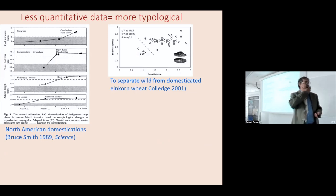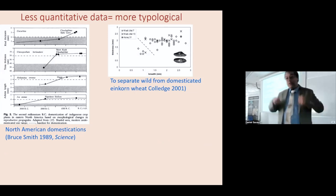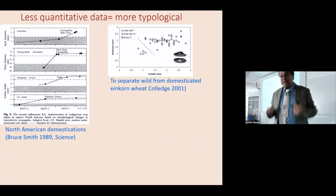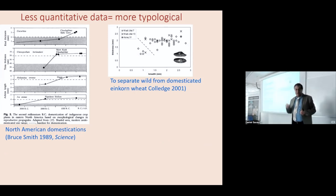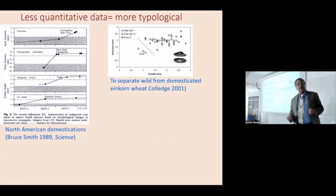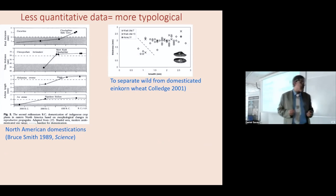So where have we been? If we go back to the end of the 20th century, where were we? We knew there were differences in seed size and even differences in seed coat thickness, but the approach tended to be a typological one — it either is or isn't the domesticated type.